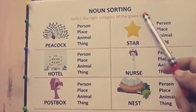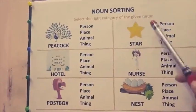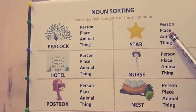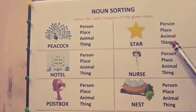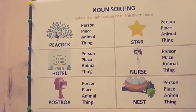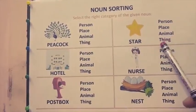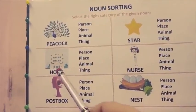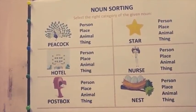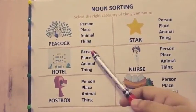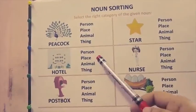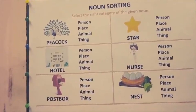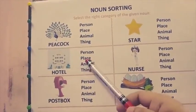Now the second one is the star. What is it — is it a person, place, animal or a thing? Yes, it's a thing. Hotel — do you stay in a hotel? Is it a person, place, animal or a thing? Yes, students, it's a place.